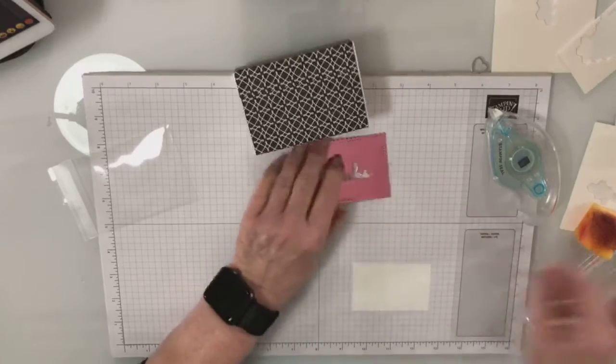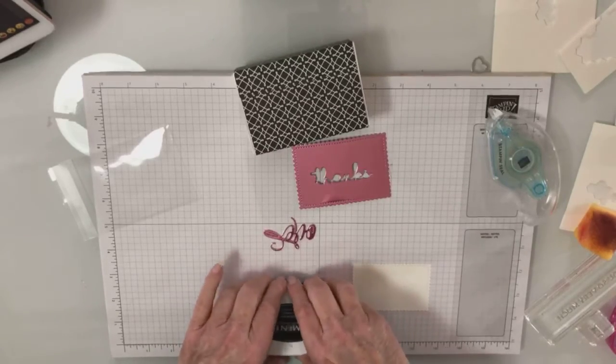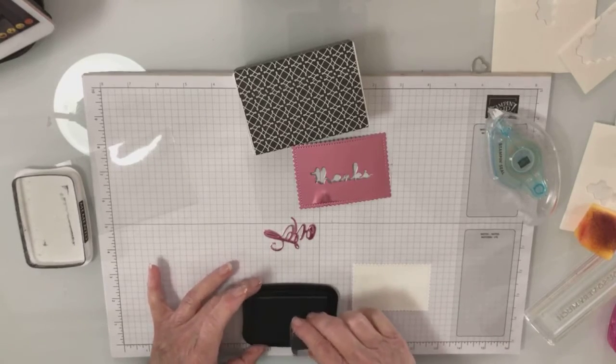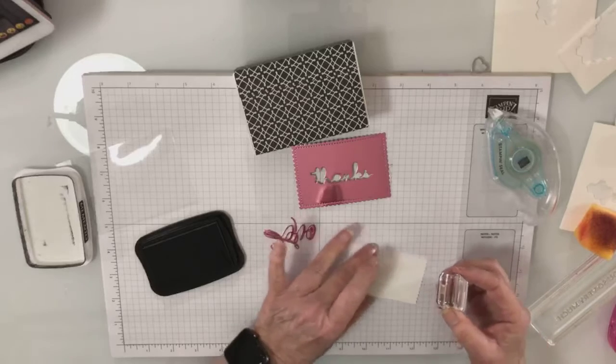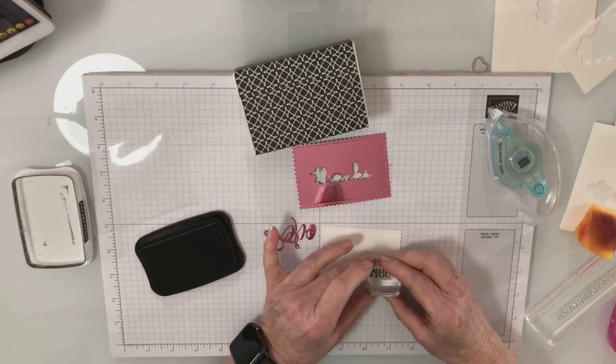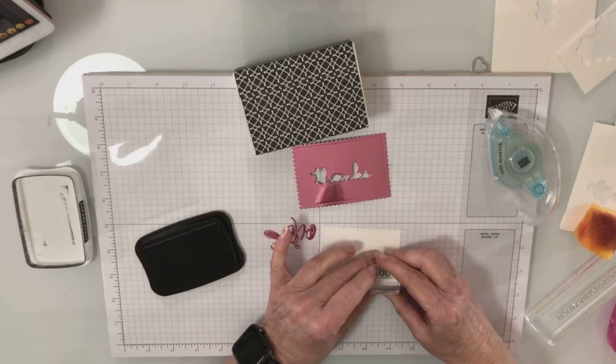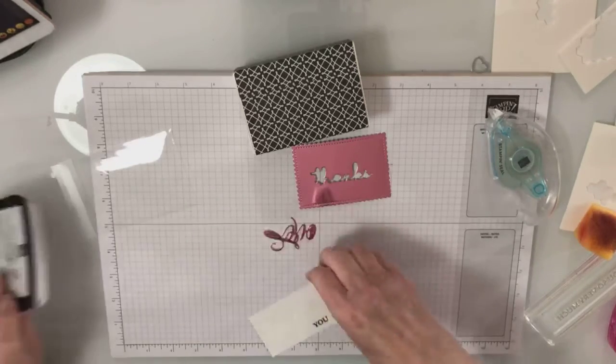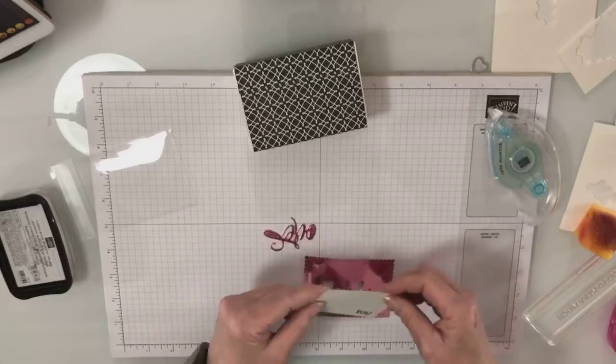I'm going to take my black Memento and my little U stamp out of the stamp set that we're using. I'm just going to stamp the U right down here, cover that up.